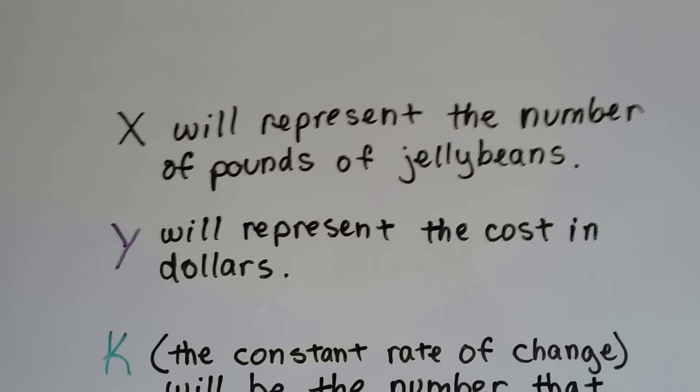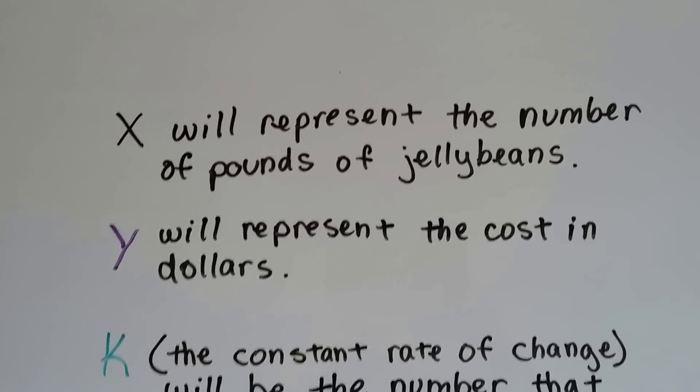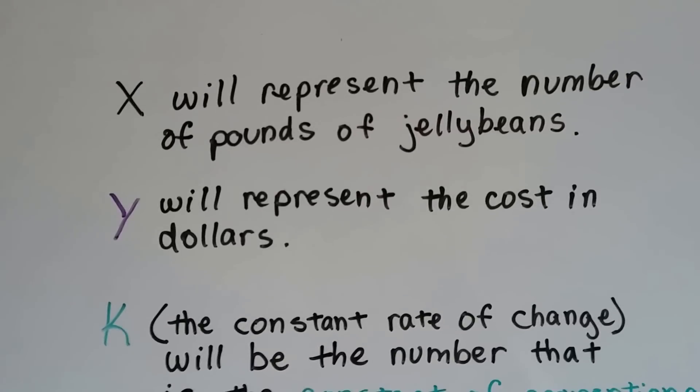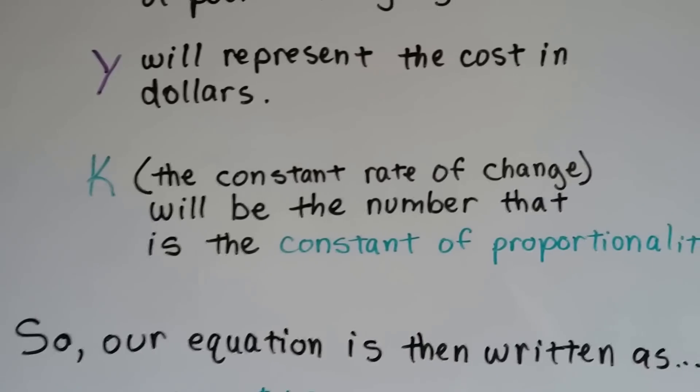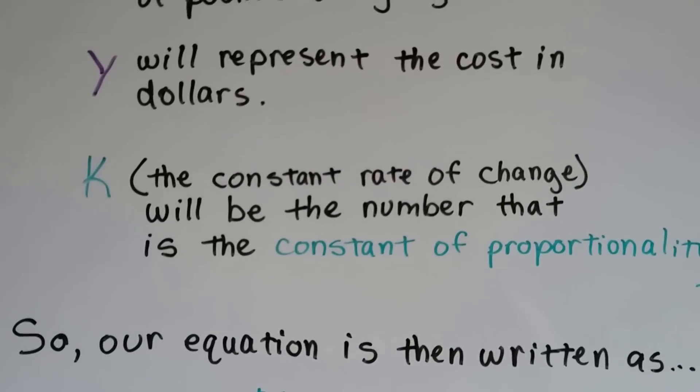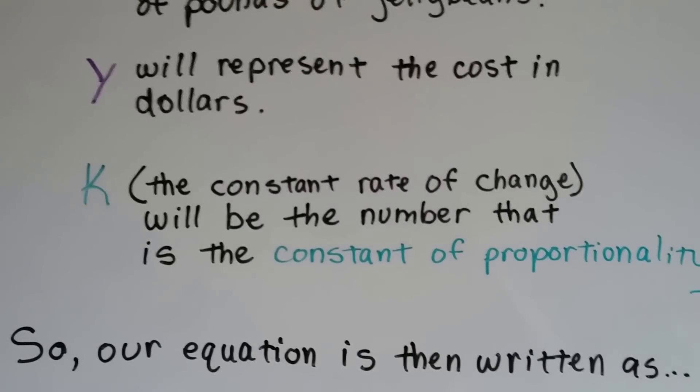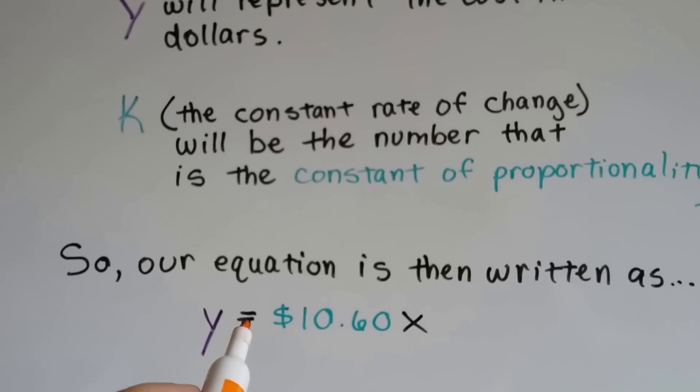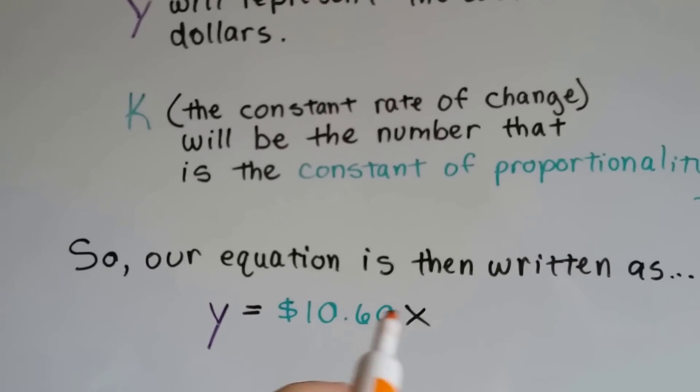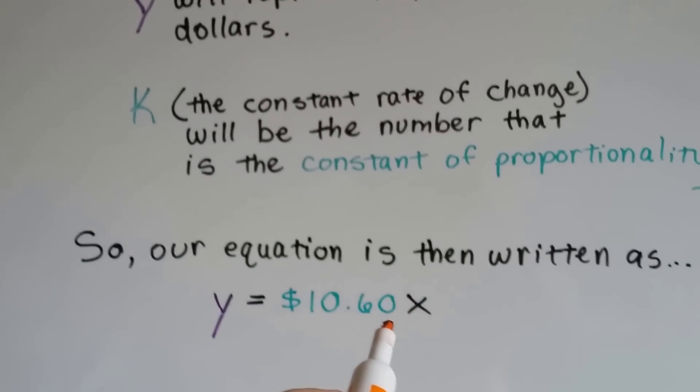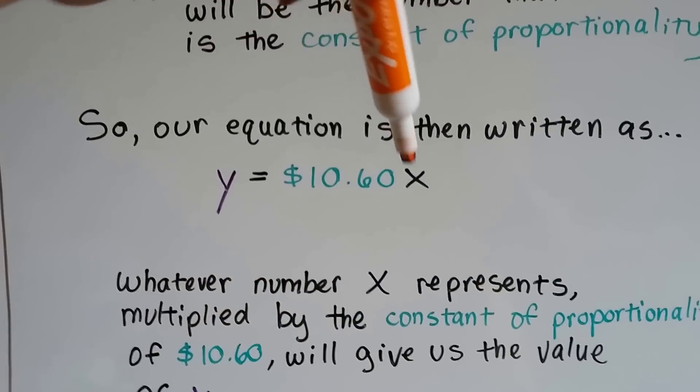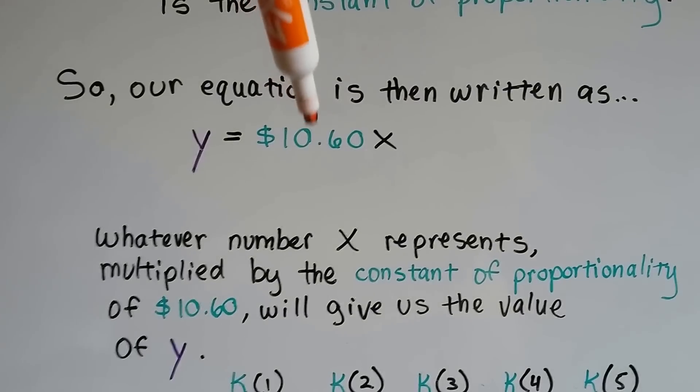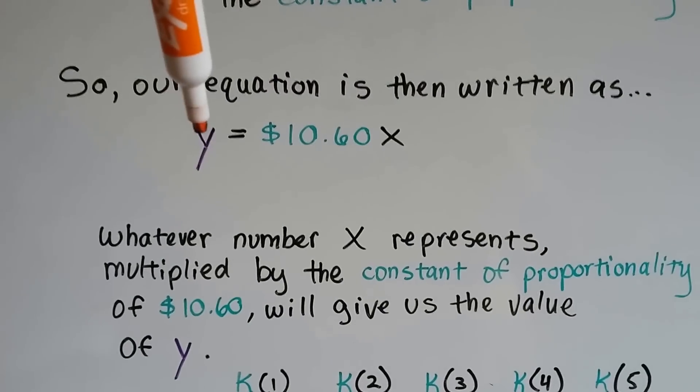We're going to use x to represent the number of pounds of jelly beans. That's the bottom number. Y is going to represent the cost in dollars. That's going to be the numerator. And then the K is the thing we're looking for. That's the constant rate of change in between the pounds and the cost. It's the constant of proportionality. Our equation is going to be written as this. Y is going to equal whatever $10.60 times x is. Whatever number represents x multiplied by this constant of proportionality, $10.60, is going to tell us the value of y.